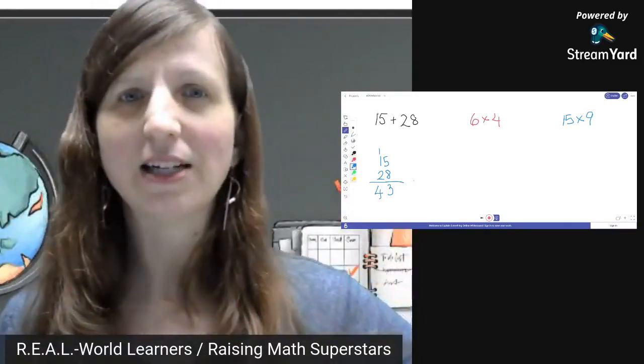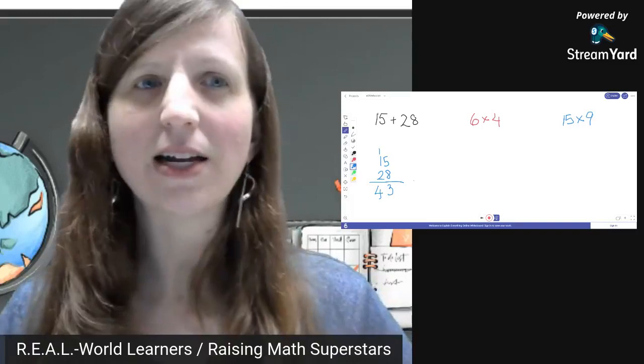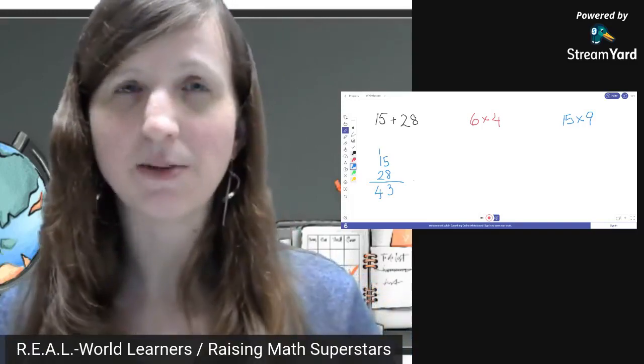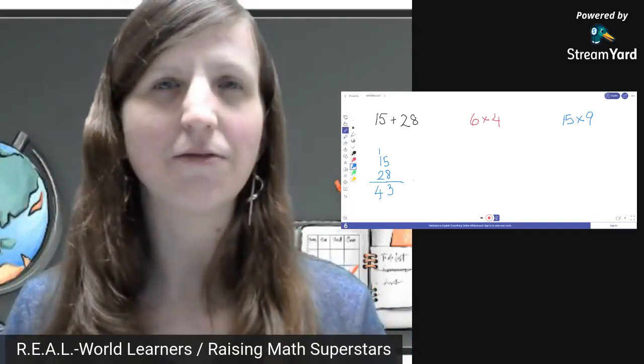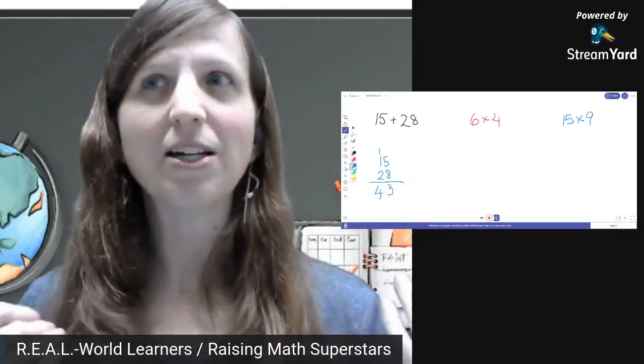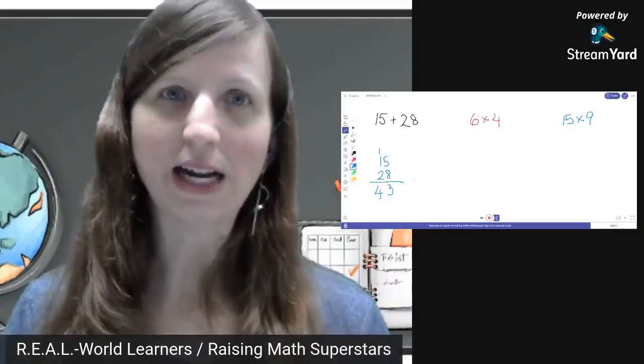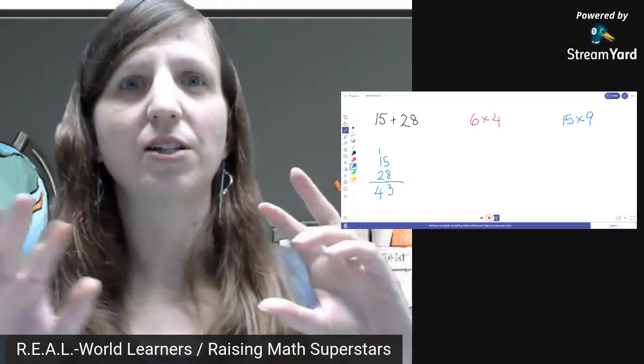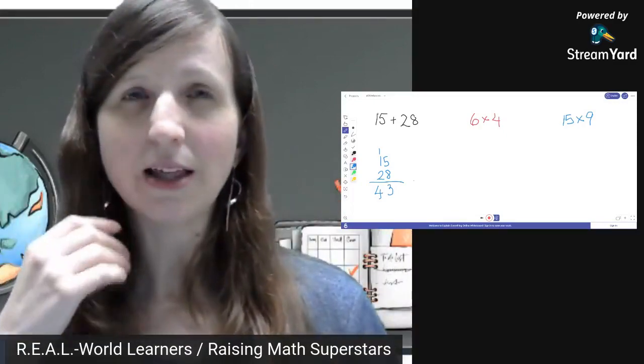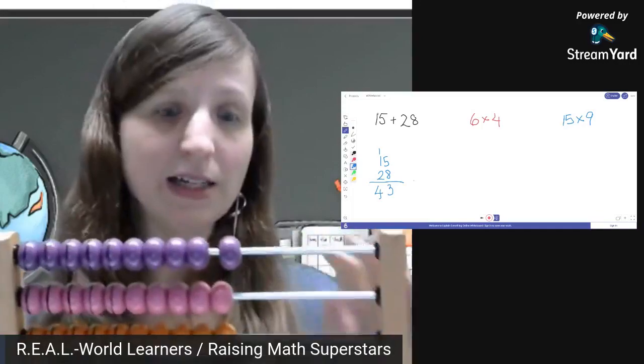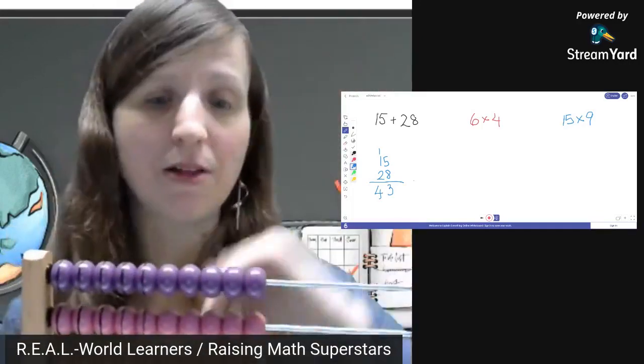So let's do another example here. Six times four. For a lot of kids, six times four is just a memorized math fact, and you're kind of doing flashcards that kids get familiar with the answer, but then it's so abstract. It's just what we call naked numbers. You just have numbers on a page without any meaning to them, and it doesn't help them if they forget it, and it doesn't help them go on to bigger things.